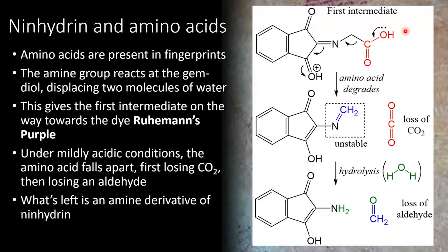Focusing on this first intermediate, under mildly acidic conditions — so we've added a proton at this point — the intermediate will further react, falling apart with the movement of electrons shown here to liberate a single molecule of carbon dioxide. Starting from the intermediate, we get degradation down to this step where we lose a molecule of CO2, which is lost from the reaction as a gas — so there's no going back. Once that's formed, it's released into the atmosphere. That leaves you with this intermediate shown here, which has an unstable functional group shown in the dashed box. Because it's unstable in the presence of water, it will liberate a molecule of aldehyde, and what we wind up with is an amine derivative of ninhydrin.